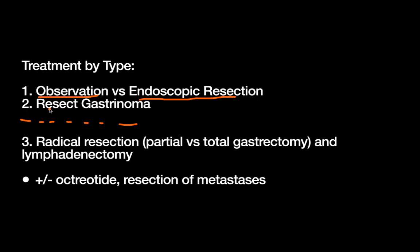For type 2, you want to address the hypergastrin state if you can. In this case, resecting the gastrinoma itself will treat the gastric neuroendocrine tumor. Of course, if the NETs persist after that or are symptomatic regardless, you can also perform an endoscopic resection.